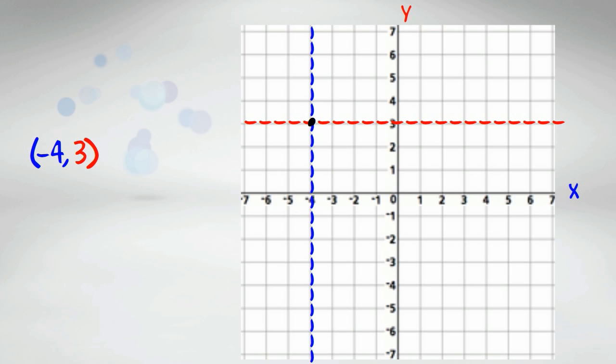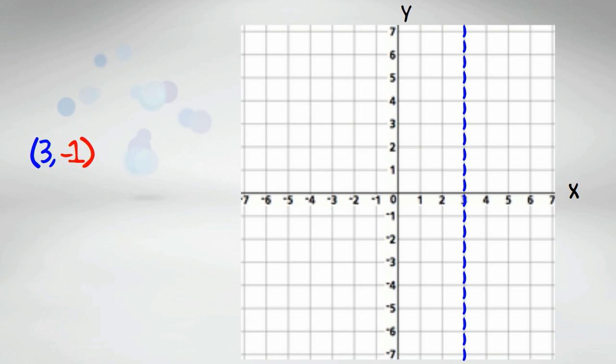That's the location of that point. Next up is the coordinate. 3 is the location on the x-axis as noted by the blue dotted line, and negative 1 is the location on the y-axis.